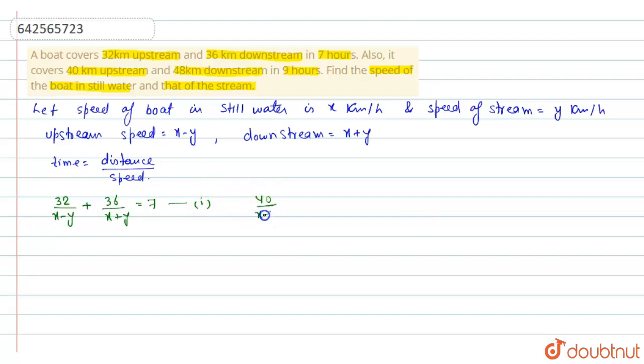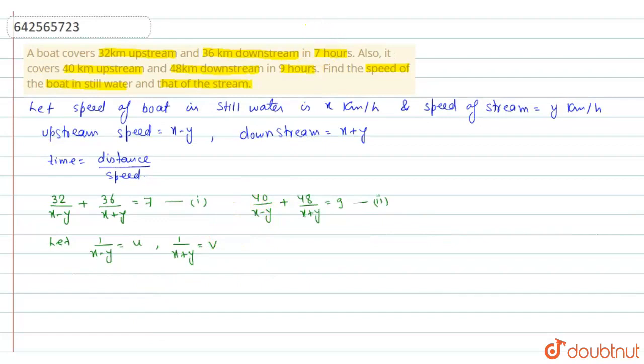Now let 1 by x minus y is equal to u and 1 by x plus y is equal to v, and this implies 32u plus 36v is equal to 7.